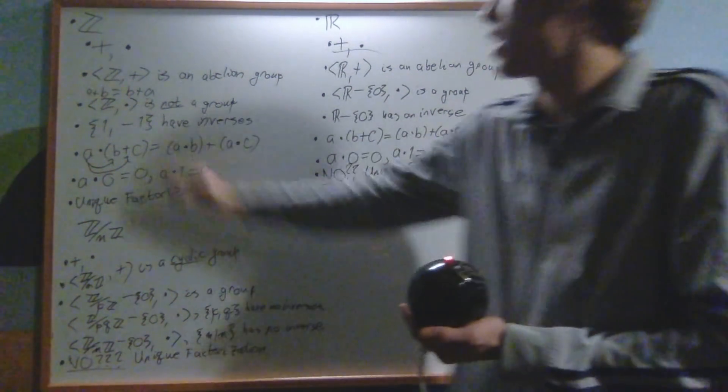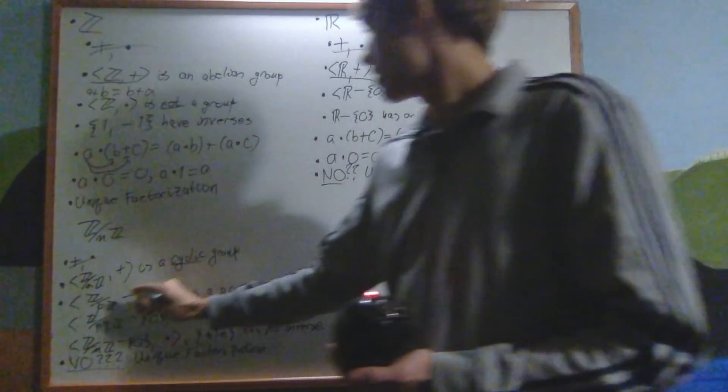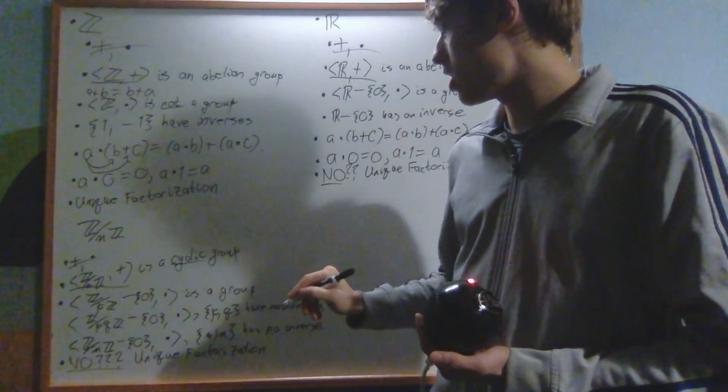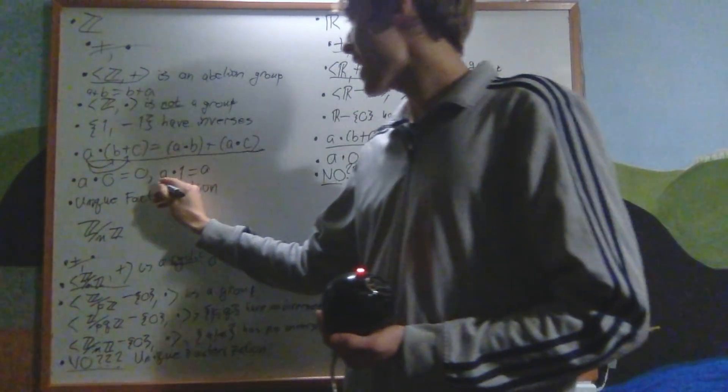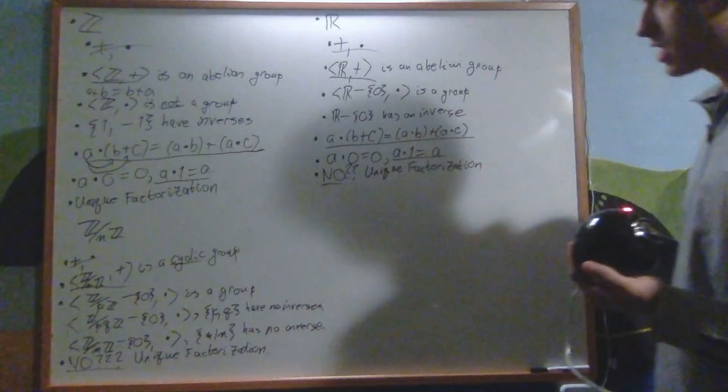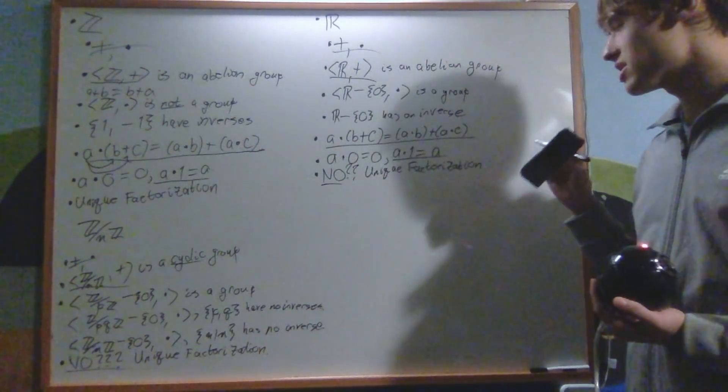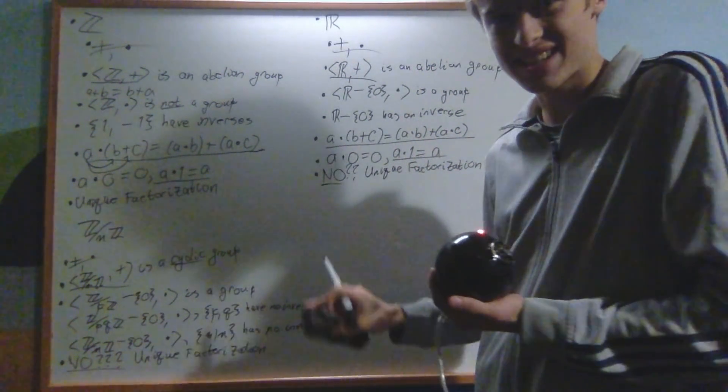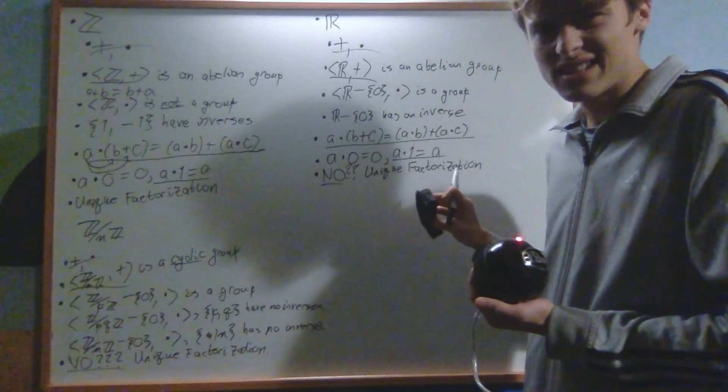But this is the idea of rings. It's this plus and multiply. Z under addition is an abelian group, is preserved throughout all of them. The property of distributive law is one that's shared between all of them. The law that a times 1 equals a is shared between all of them. And that's really it. This is our idea for rings, is to base it off of the properties that were preserved here. Unique factorization is a weird one, because it may or may not be preserved. We don't have enough of a framework to be able to determine what unique factorization means in these other contexts.